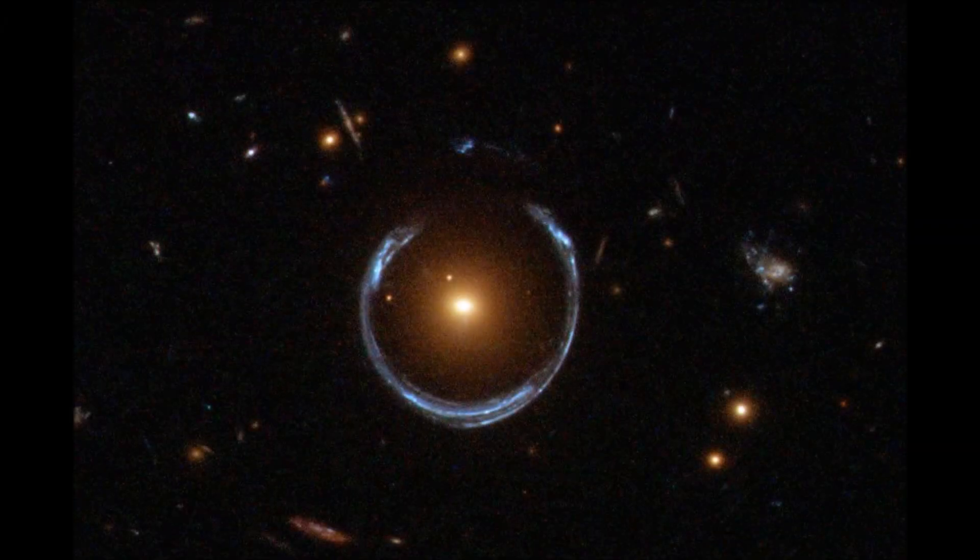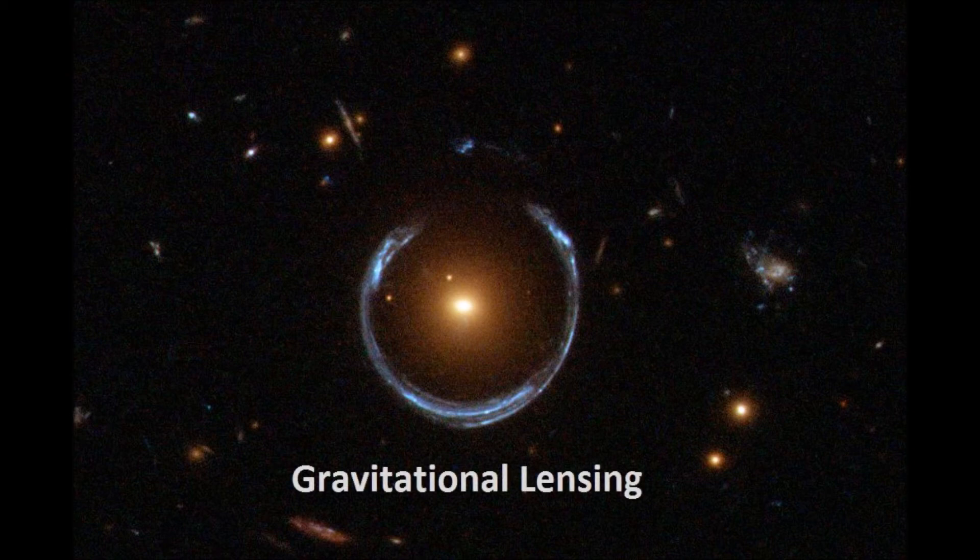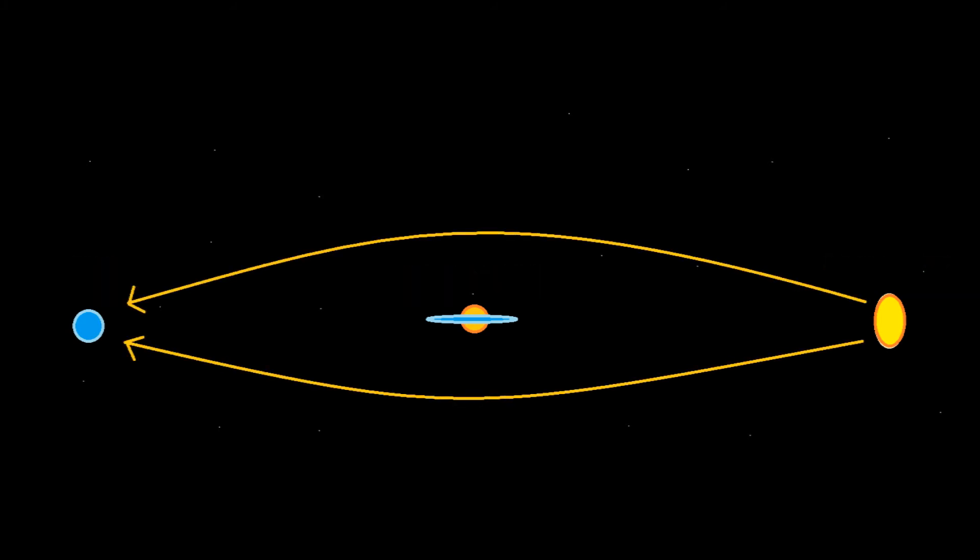Another observable phenomena related to general relativity gravity is called gravitational lensing. Gravitational lensing occurs when us, observers from Earth, attempt to observe a very distant object with a collection of mass in between, such as a cluster of galaxies. The massive galaxy in between the distant object and Earth will curve the light as it passes by it. This curvature is what creates the lensing effect that we observe from here on Earth.